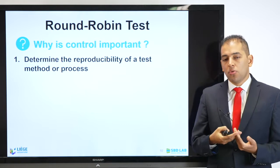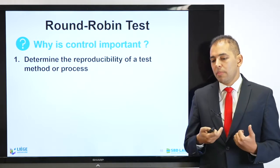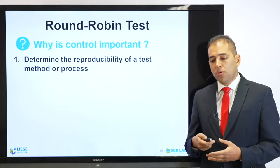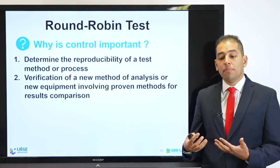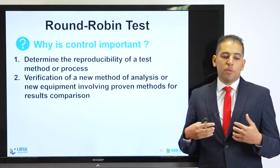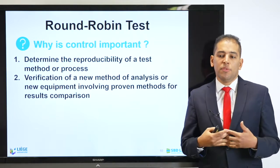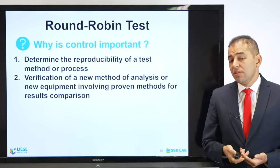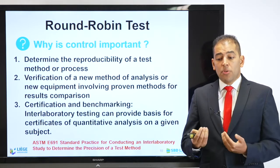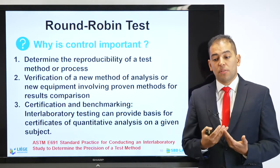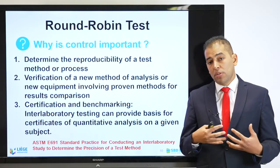Why should I control my measurement and why should I do this round-robin test? Because I need to determine the reproducibility of my test method or process — it's a way to validate my technique and protocol. It allows a verification step: the verification of a new method of analysis or new equipment involving proven methods for results comparison. This is especially important when initiating a new lab, using a new procedure, or even inventing a new procedure. It is also used for certification and benchmarking, as inter-laboratory testing can provide a basis for certificates of quantitative analysis, making consistency between labs higher and validating your work.